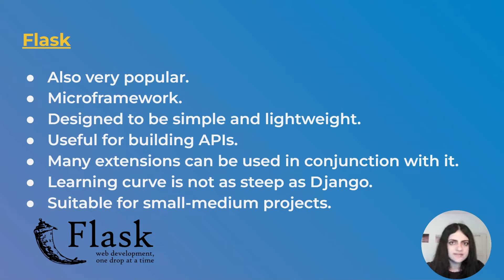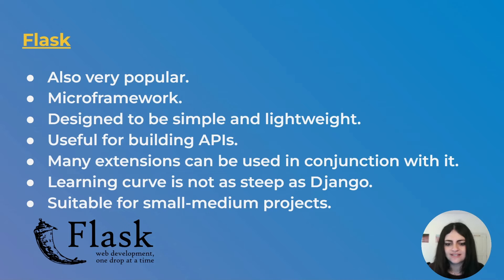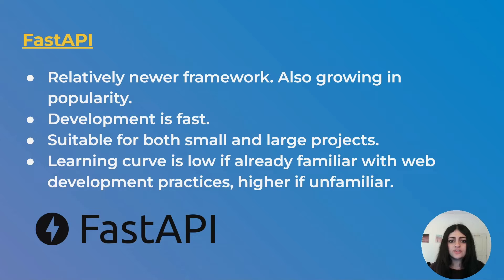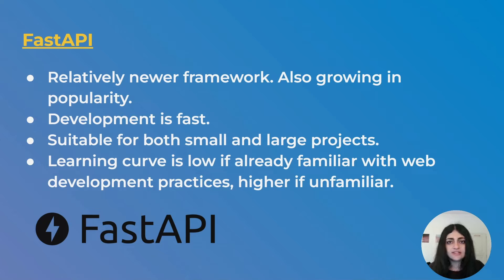Flask's learning curve is not as steep as Django's, so you can learn it much faster. It's suitable for small to medium projects — not really for very large-scale applications, but great when you want to whip something up quickly. The next one is FastAPI, which is relatively newer but growing in popularity. Its development is super fast — it allows you to build APIs in a very rapid manner, so you don't need to spend much time setting them up. It's suitable for both small and large projects.